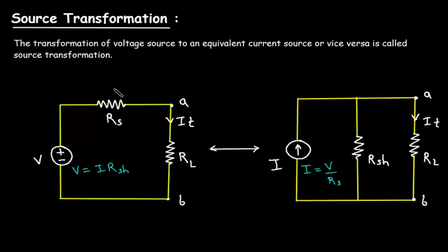We will convert this series resistance into a parallel resistance. Here we can see we have converted this series resistance into a parallel resistance and changed this voltage source into a current source. Also, the direction of this current source depends on the polarity of the voltage source. The positive polarity is upward and negative polarity is downward, so the direction of this current source is upward.